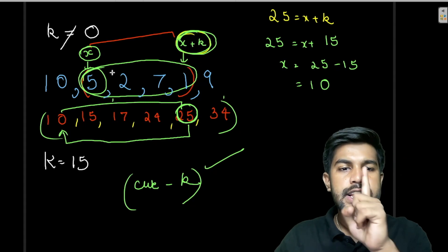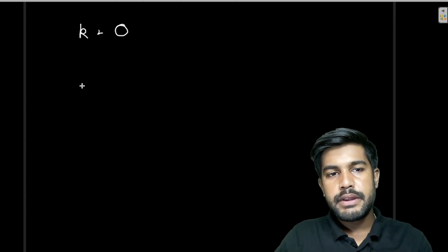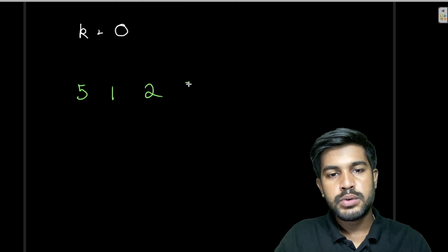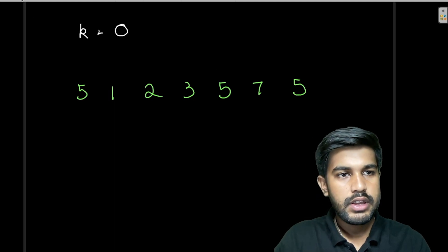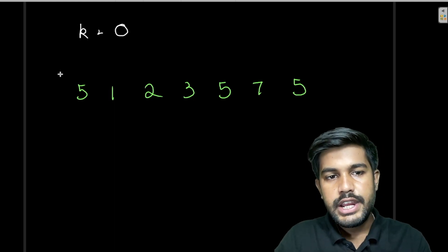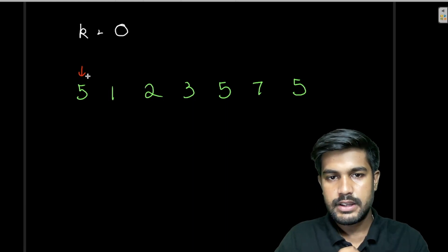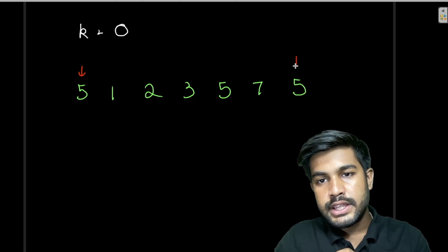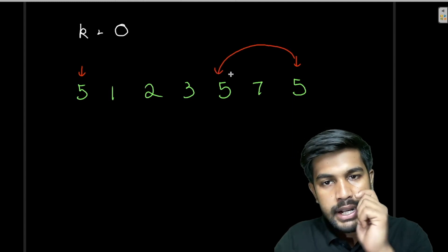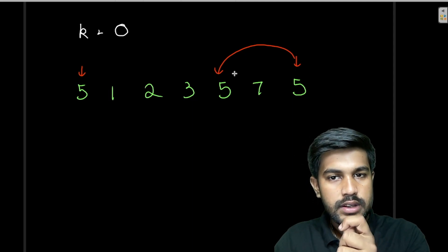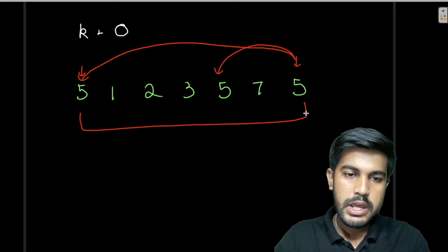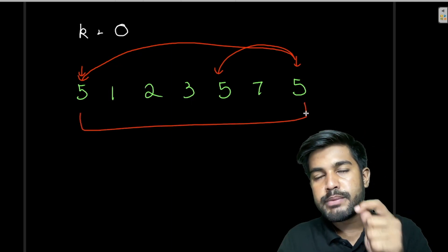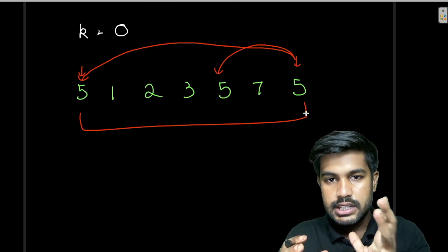One important detail: we need to store only the very first occurrence of each prefix sum value. If the prefix sums are 5, 1, 2, 3, 5, 7, 5 and we are checking against the last 5, we want to use the first occurrence at index 0 (not a later one) to get the longest possible subarray length. Storing the most recent occurrence would give a shorter length, so we only hash a value if it hasn't been seen before.